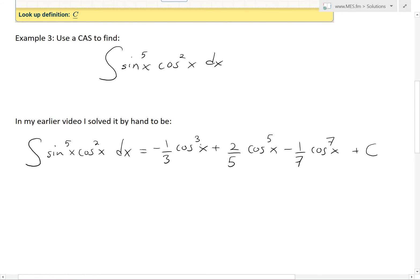And this is the answer that we got. There's a negative 1 over 3 cos cubed, plus 2 over 5 cos power of 5, minus 1 over 7, times cos 7 plus constant c.